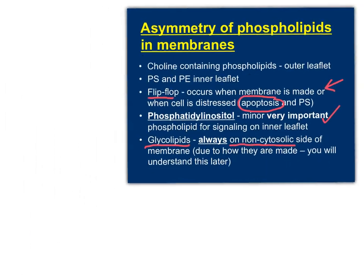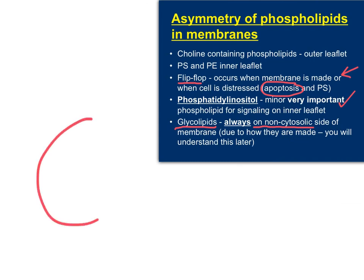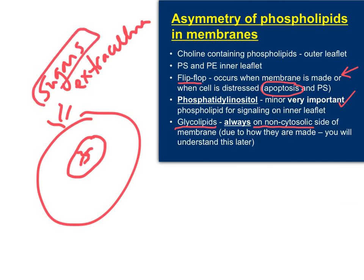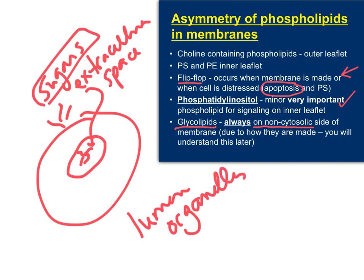If we're looking at a cell structure, glycolipids stick out on the extracellular side of the plasma membrane. For organelles inside the cell, glycolipids can only be on the non-cytosolic side, so the sugars — the glyco part of the glycolipid — always end up in what is essentially the same as the extracellular space. Interestingly, the lumen of organelles is basically the same as being outside the cell, so you can have glycolipids that face the internal surface of organelles.